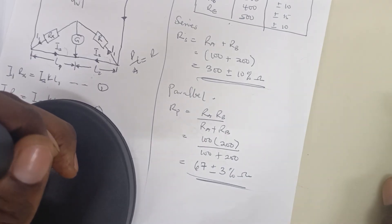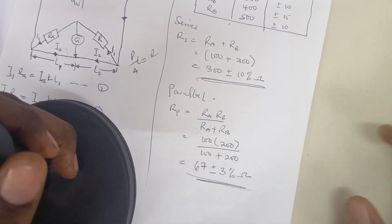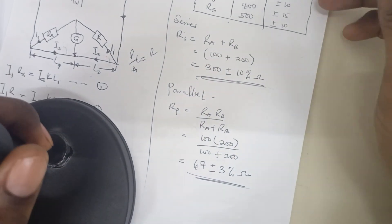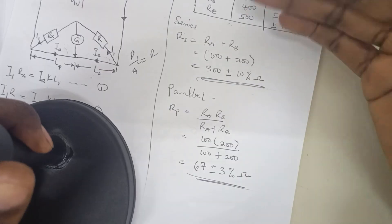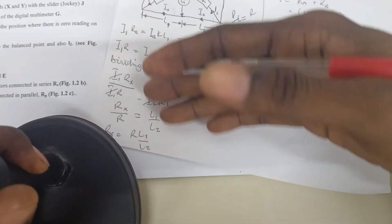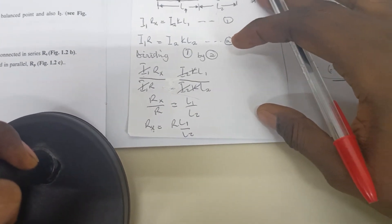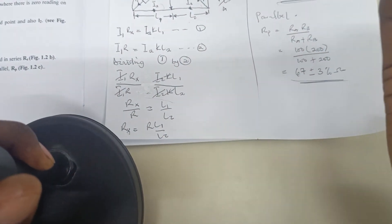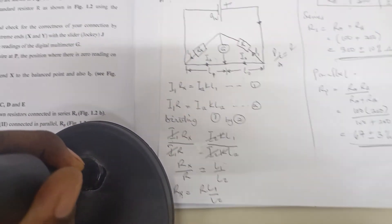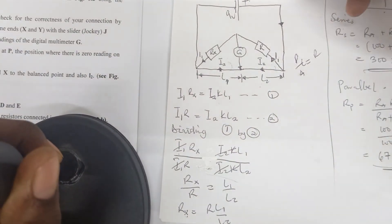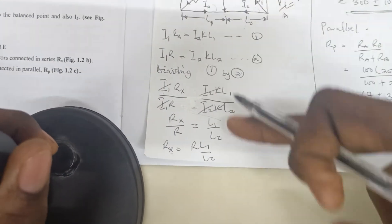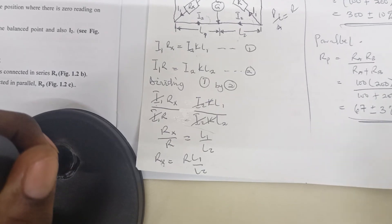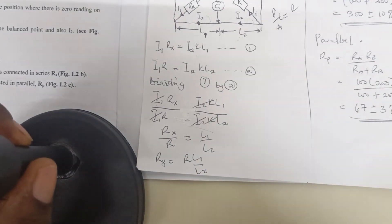There is no graph for this experiment. That's how to do your calculation and the theory — what you are supposed to write. Avoid writing too much grammar; theory is supposed to give us formulas and how you go about it. So this is the theory for the experiment. Thank you.